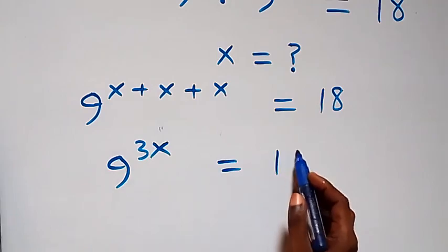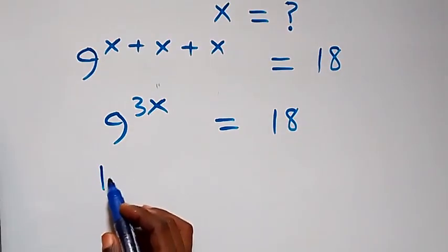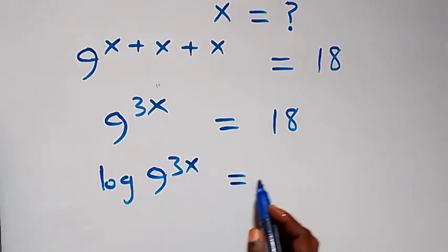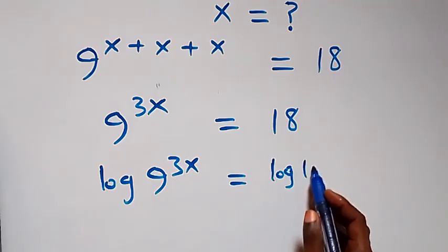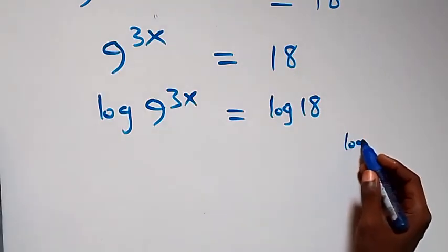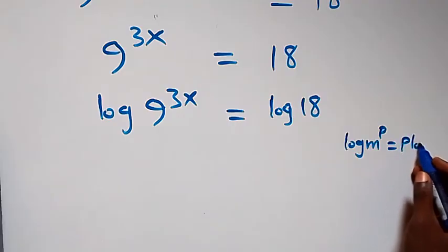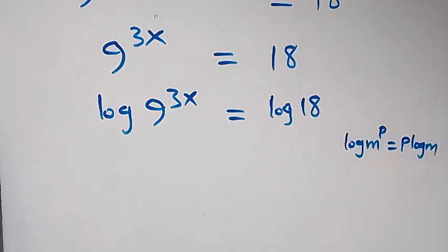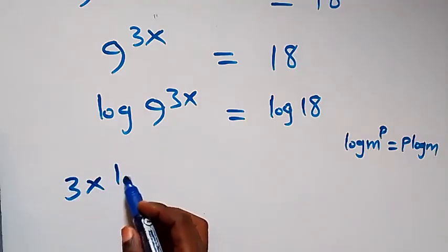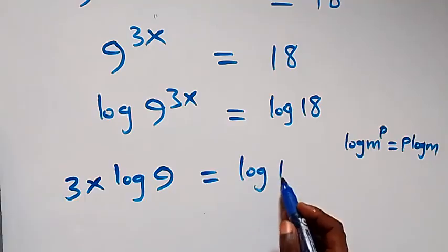Then equals to 18. From here, this also becomes 9 raised to power 3x, then equals to 18. From here we can take the log on both sides. We have log 9 raised to power 3x equals to log 18. When we apply the power law of logarithms — log m raised to power p equals p log m — this power can be taken to the front.